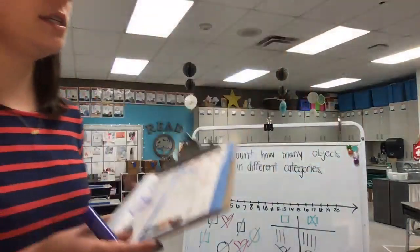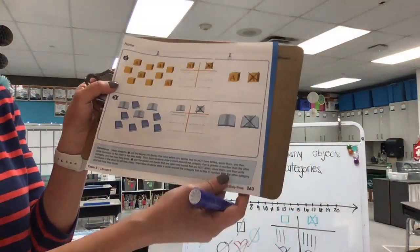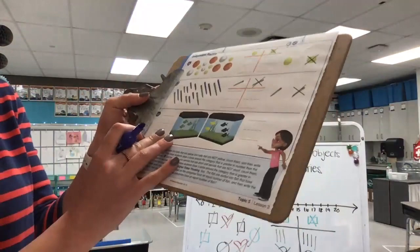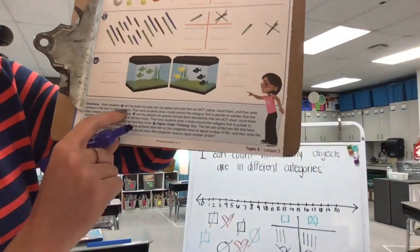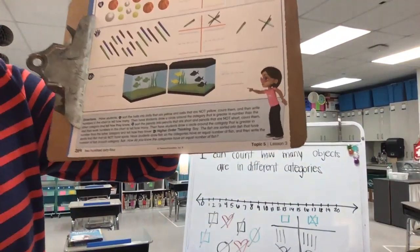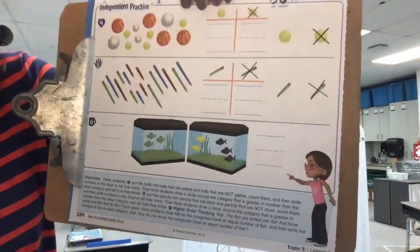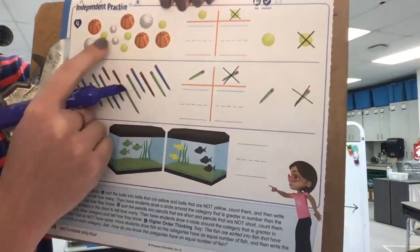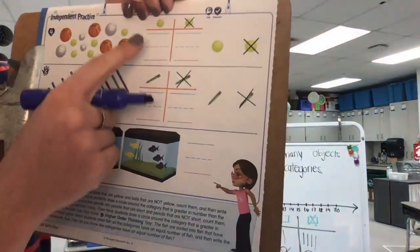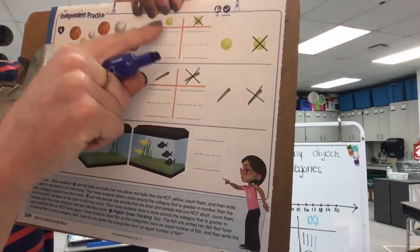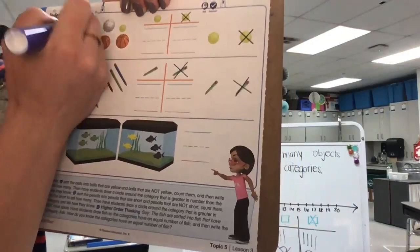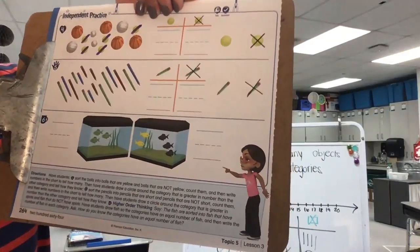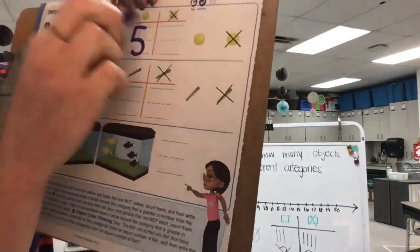Today we're going to continue practicing. Flip past page 263 — that's what you'll do on your own for your teacher's Google Classroom — and flip to the back where we see problems four, five, and six. We're going to start at the top with the sports balls. It tells us to sort the balls into a group that are yellow versus the group that are not yellow. Let's first count and mark out the yellow balls. Ready? One, two, three, four, five. How many yellow balls are there? Five. Let's write a five under the yellow ball on the T chart.